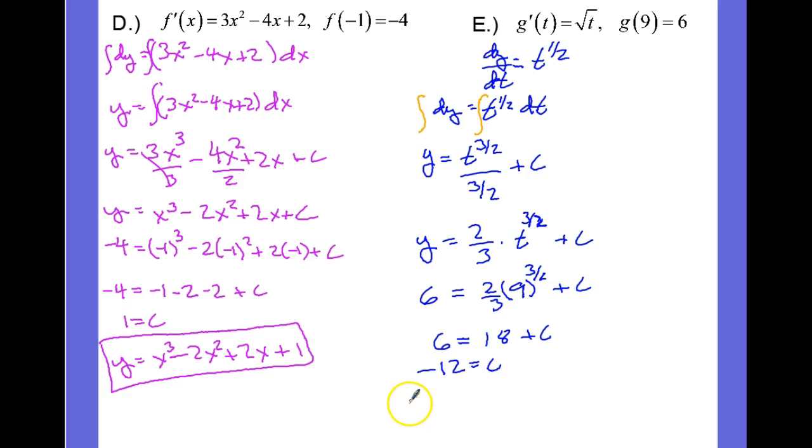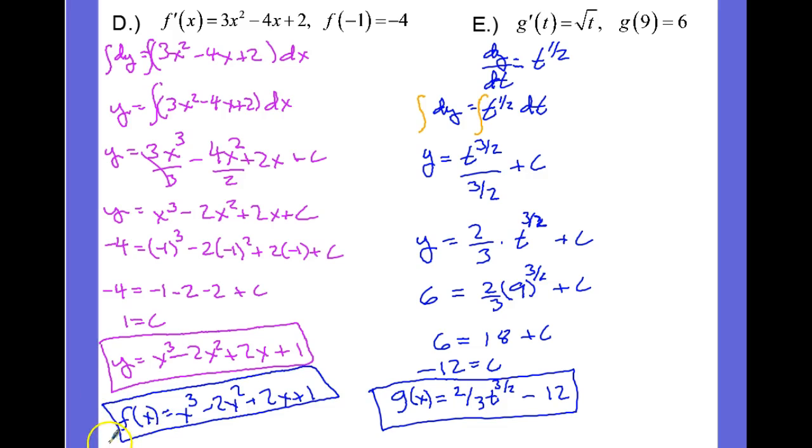And so now we have, actually let's call that g. g of x is equal to 2 thirds t to the 3 halves minus 12. And if you want to over here where we had y, you could write that as the original function f of x, just to go back to the original notation.